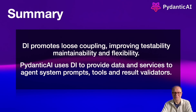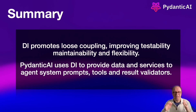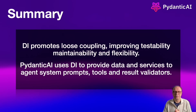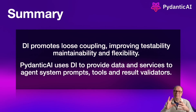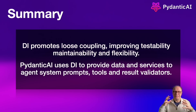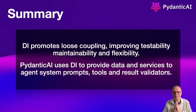Dependency injection is a software design pattern that promotes loose coupling by injecting dependencies — such as services, objects, databases, configurations, API calls, client libraries — into a component rather than having the component create them itself. This reduces compile-time dependencies, moving them into runtime. When APIs change, you're not breaking your systems, and you introduce loose coupling that improves testability, maintainability, and flexibility, making it easier to manage systems at scale.